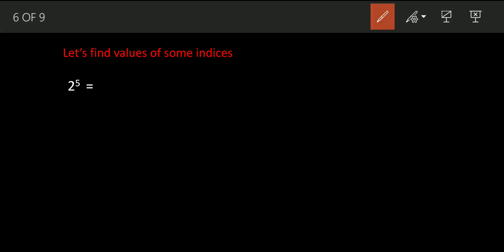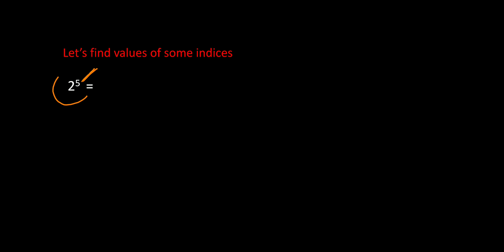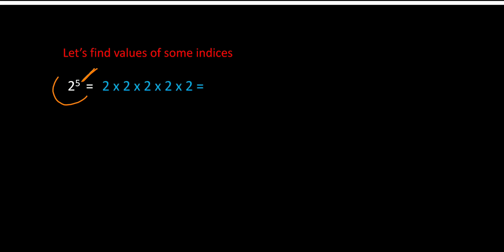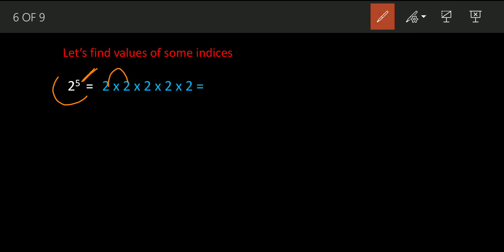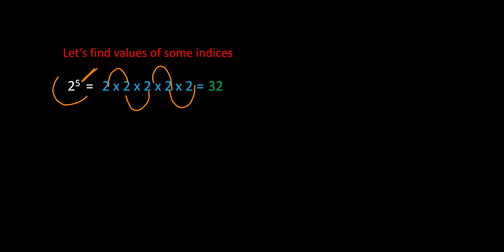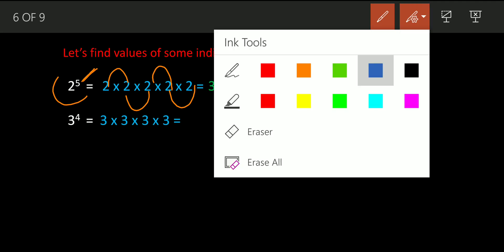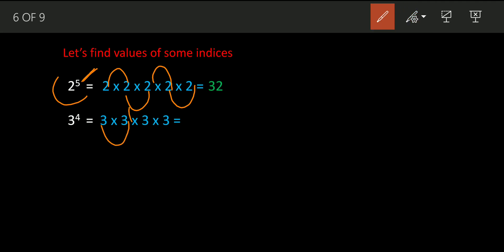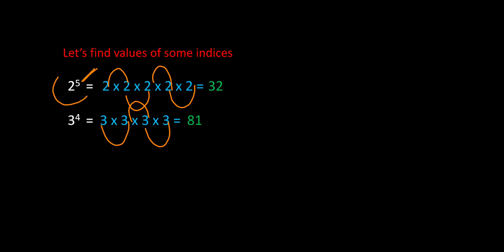Now let us find the values of some indices. First, two raised to five: two is the base, five is the power, so we multiply two five times — two into two into two into two into two. Four, eight, 16, 32. So the value of two raised to five is 32. Now three raised to four: three multiplied four times — three into three into three into three. Nine, 27, 81. The value is 81.